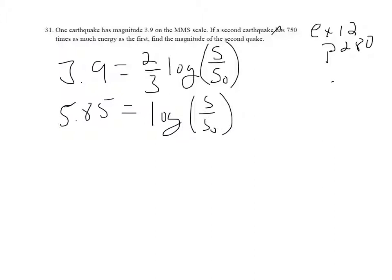And then I'm going to exponentiate everything. So 10 to the 5.85 equals S over S sub 0. So that'll be 10 to the 5.85 times S sub 0 equals S.